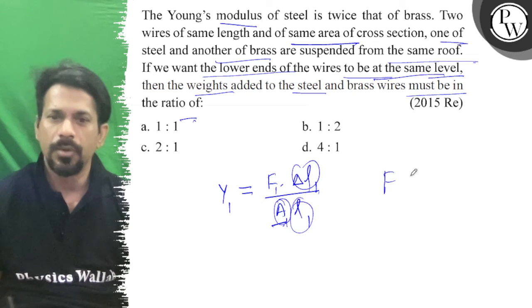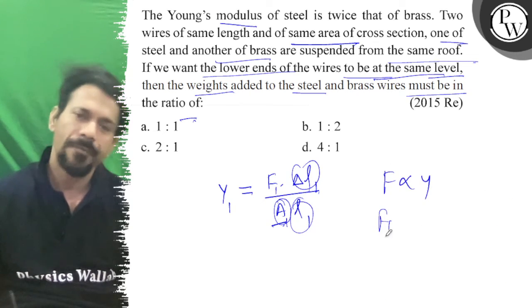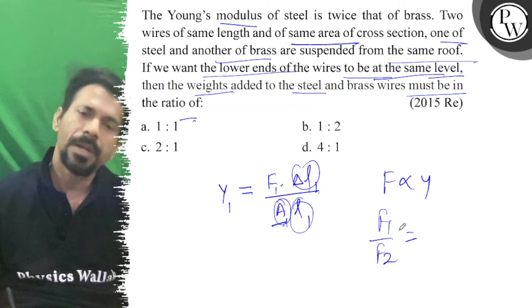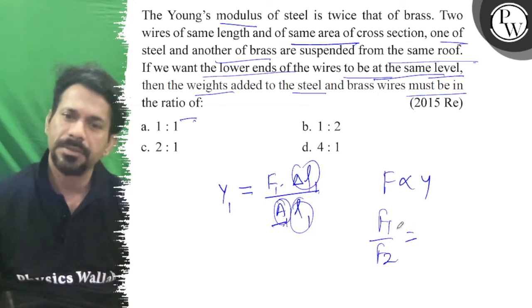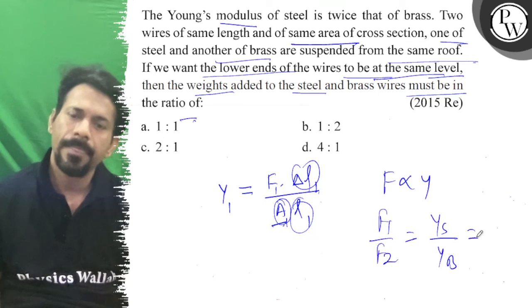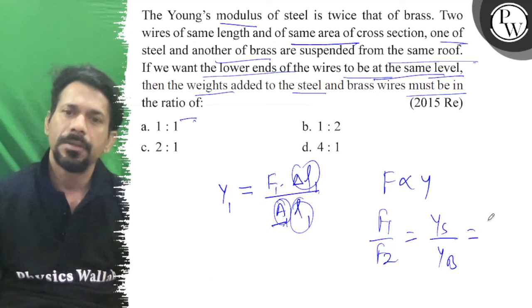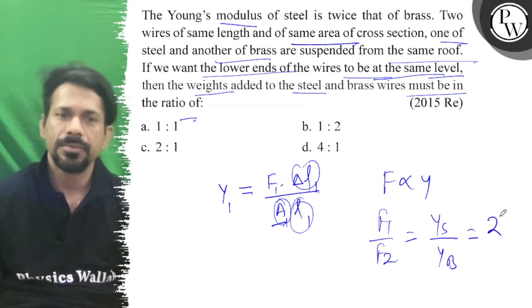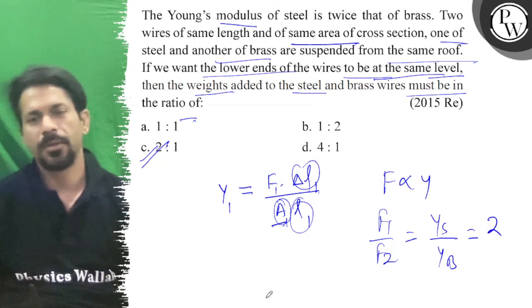That means load is directly proportional to Y, so F1 upon F2, that means steel and brass, is Y steel upon Y brass. So this is twice that of brass, so 2:1. That's the option, it's correct. All the best.